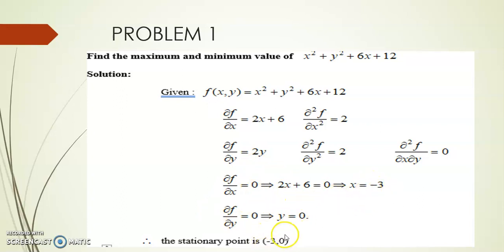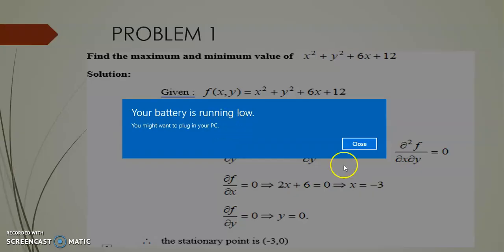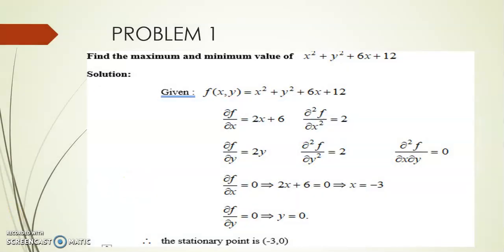The stationary point is (-3, 0). Now we find the second derivatives r, s, and t. r = fxx = 2 (differentiating 2x+6 with respect to x), t = fyy = 2 (differentiating 2y with respect to y), and s = fxy = 0 (since there is no y term in fx). So r = 2, s = 0, t = 2.